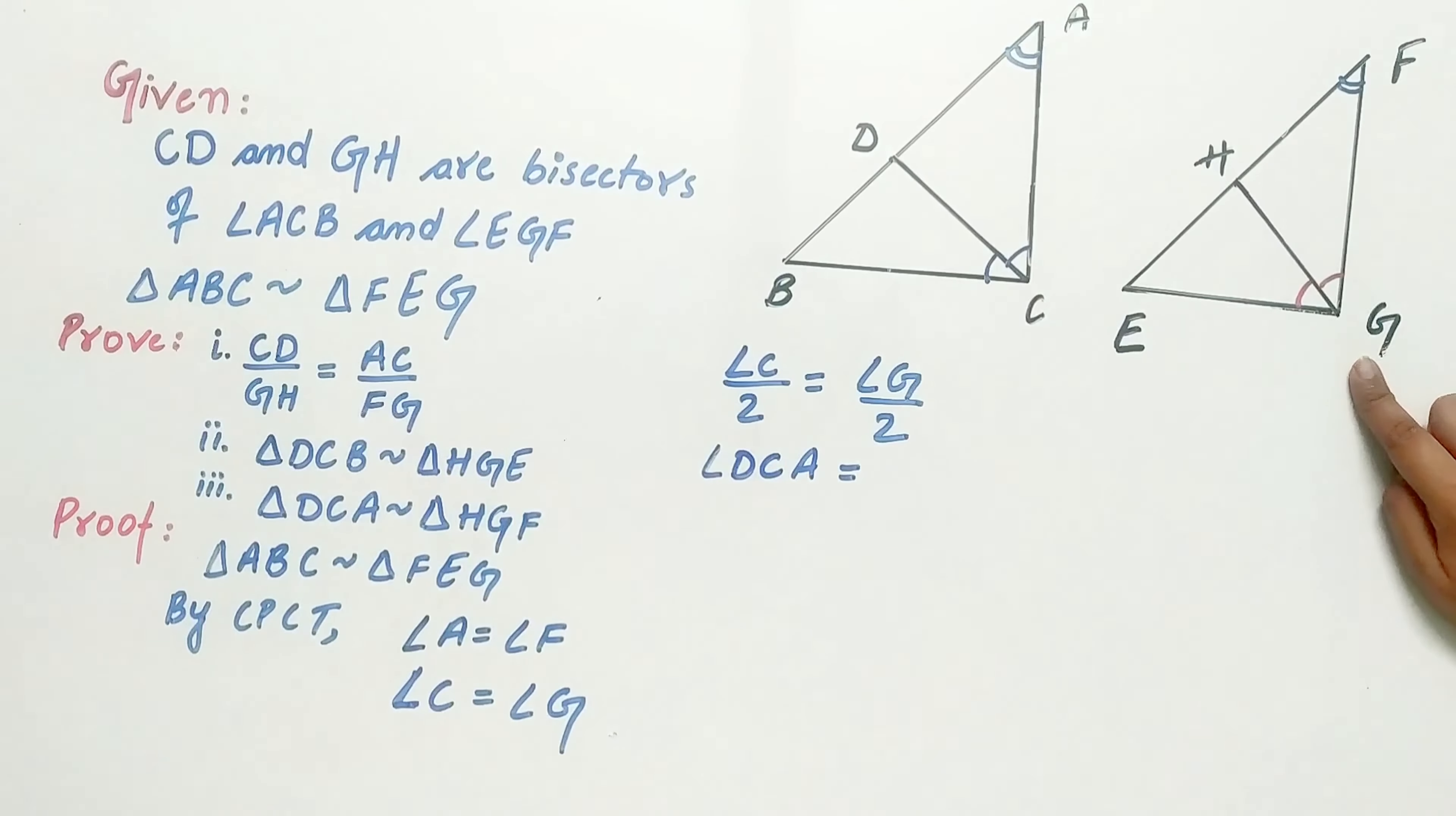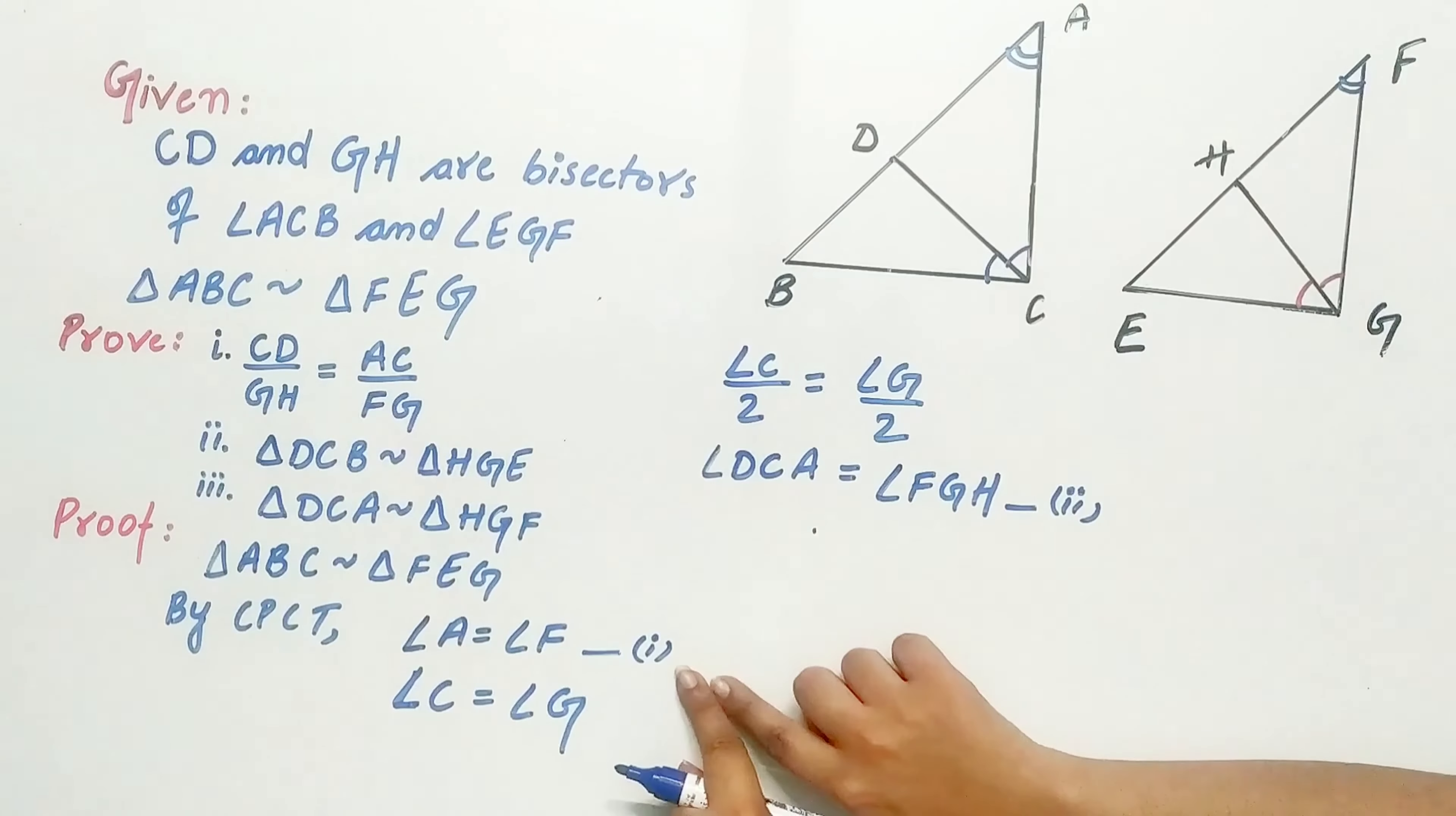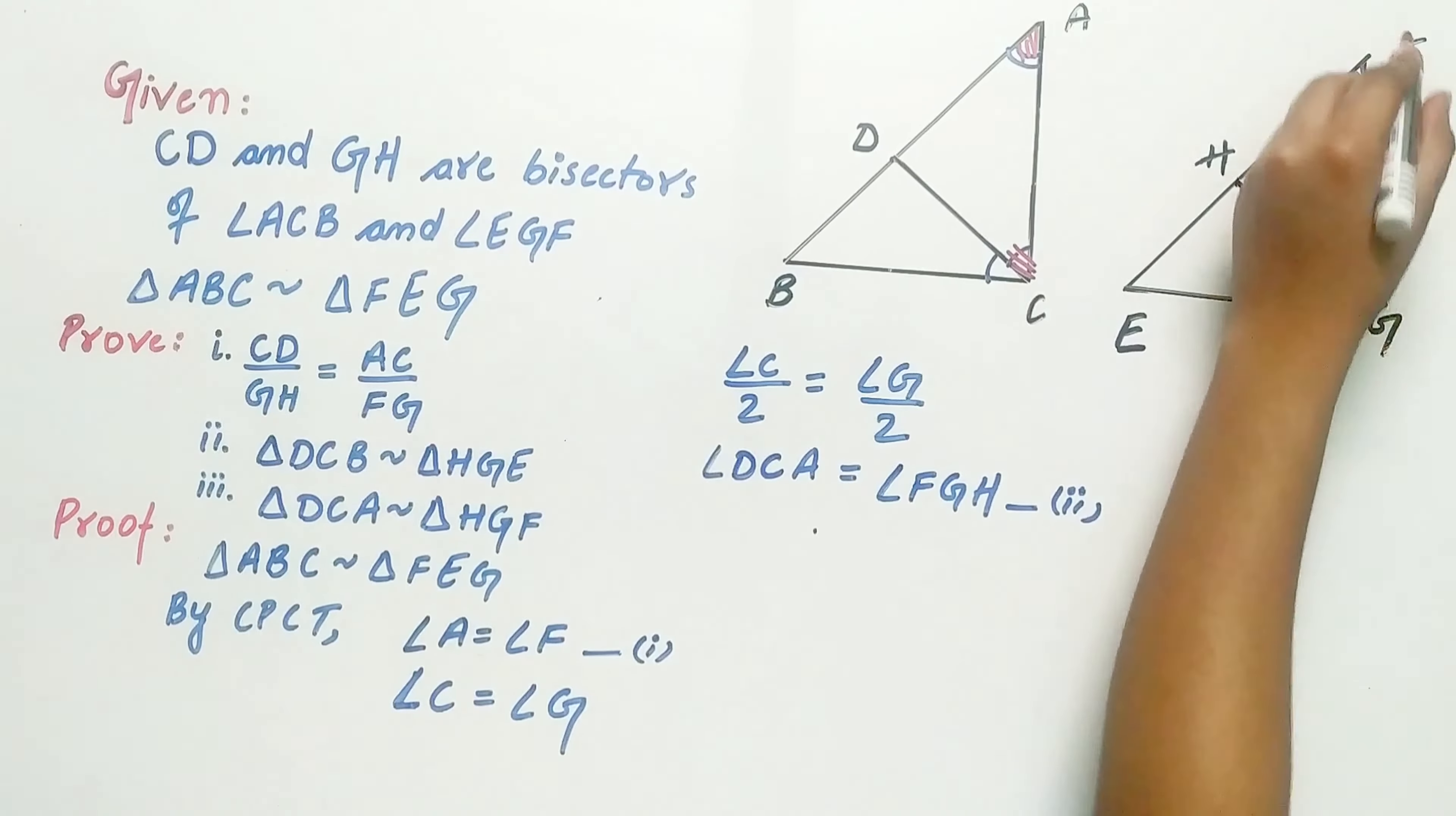Angle G by 2 is FGH. Hence, by first and second, our angle A is equal to angle F, and angle DCA is equal to angle FGH.